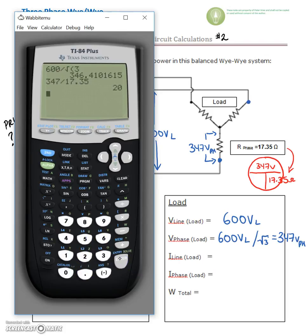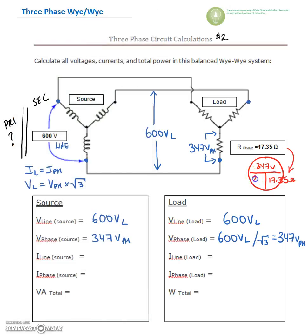We've got that from this guy right here. And 347 divided by 17.35 gives us 20 amps. 20 amps on the phase.